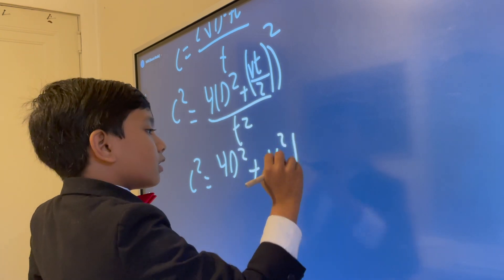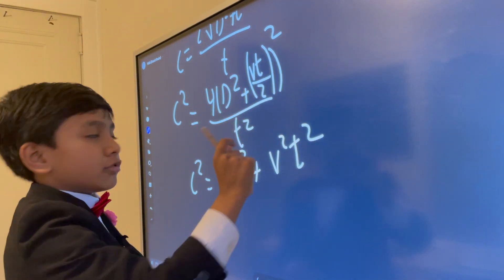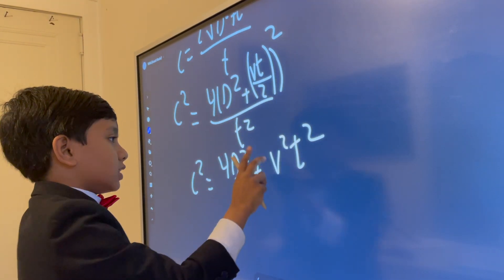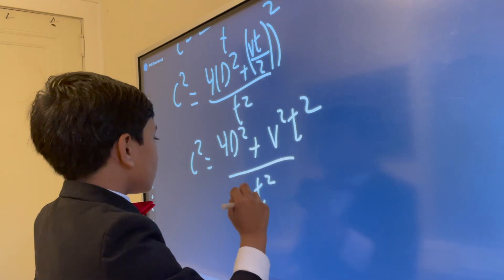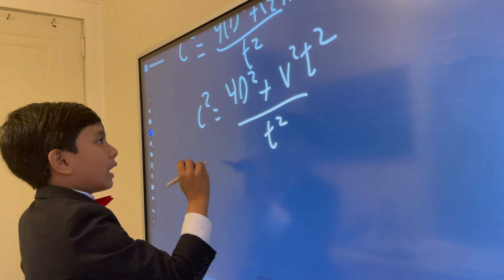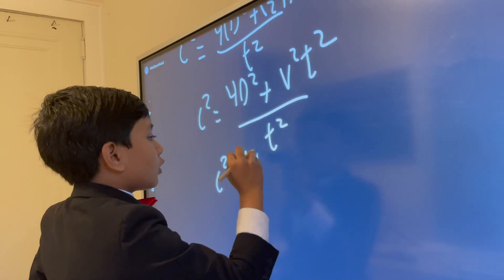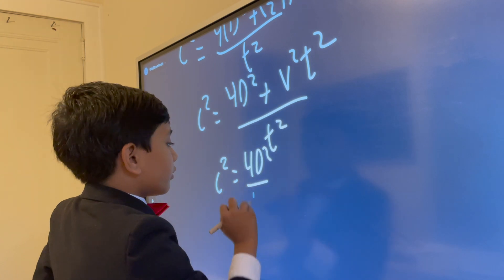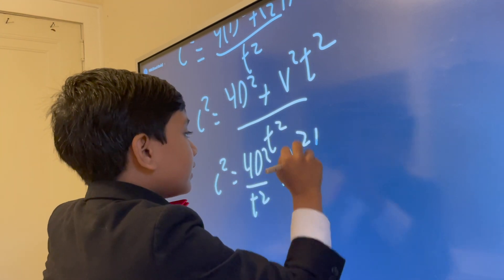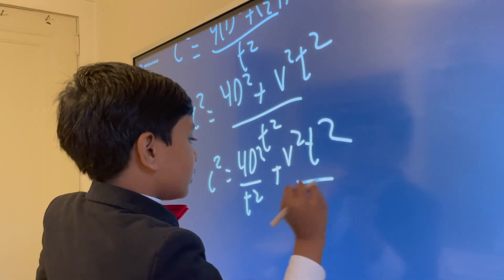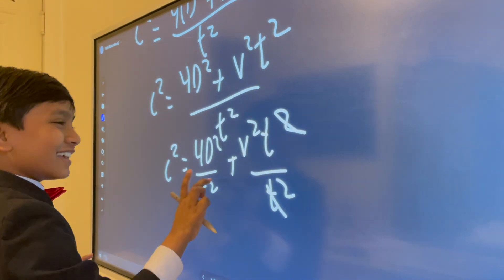And they have a denominator of 4 when you square it, so those cancel out over T squared. That ends up T squared over T squared, plus T squared, T squared over T squared — those cancel out.